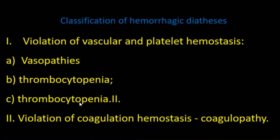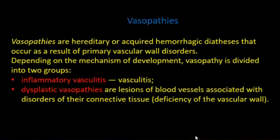Types include: thrombocytopenia, thrombocytopathy, coagulopathy, and vasopathy. Vasopathy is a hereditary hemorrhagic diathesis that occurs as a result of primary vascular wall disorders. Depending on the mechanism of development, vasopathy is divided into two groups: inflammatory vasculitis and dysplastic vasopathy — disorders of blood vessels associated with disorders of their connective tissue.